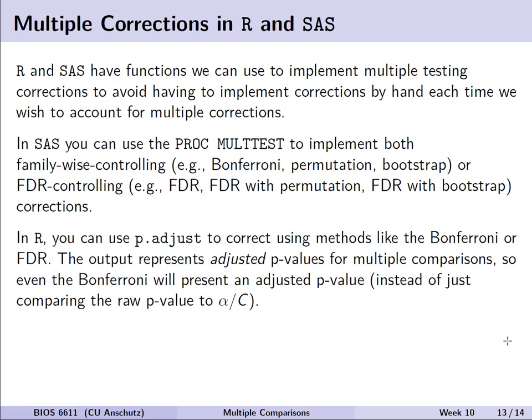We can also perform multiple corrections in R and SAS without manual calculations. In SAS there is a procedure called PROC MULTTEST where you can implement both family-wise controlling or FDR controlling procedures, such as the Bonferroni, bootstrap, permutation tests, or FDR versions. In R there is a p.adjust function which takes a vector of p-values and applies corrections like the Bonferroni or the FDR, outputting adjusted p-values or FDR for your multiple comparisons.